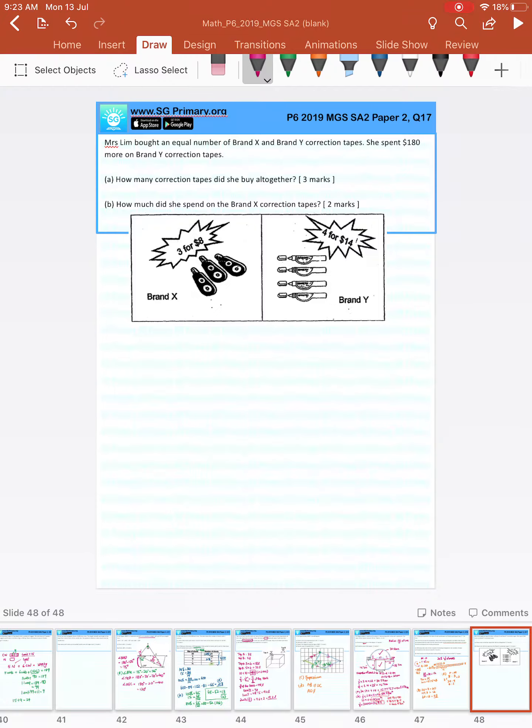She bought an equal number of Brand X and Brand Y. Looking at the numbers 3 and 4, 12 is the first common multiple. So let's find how much 12 correction tapes from Brand X and 12 correction tapes from Brand Y costs.